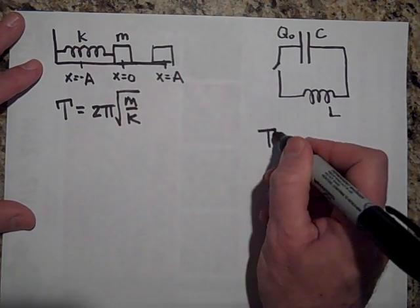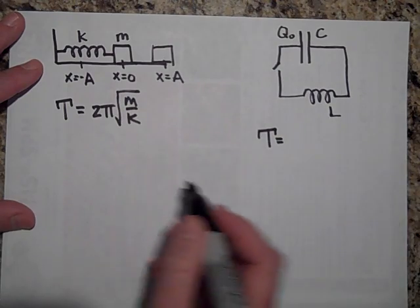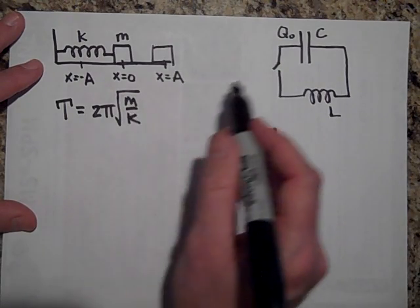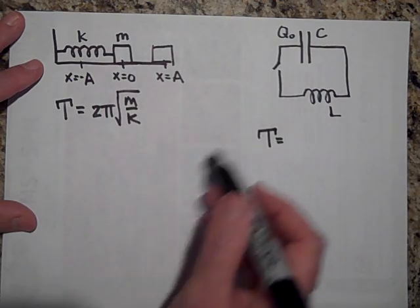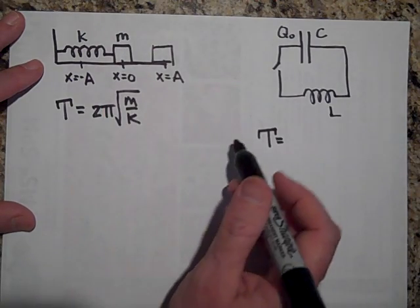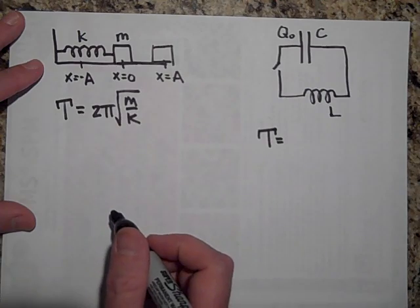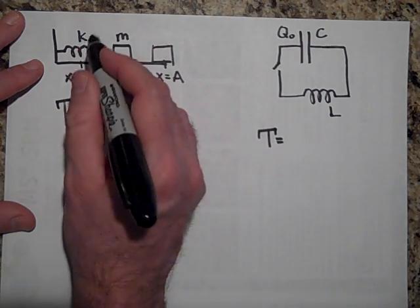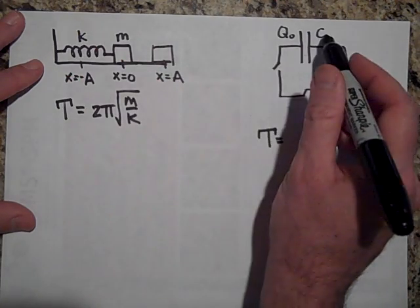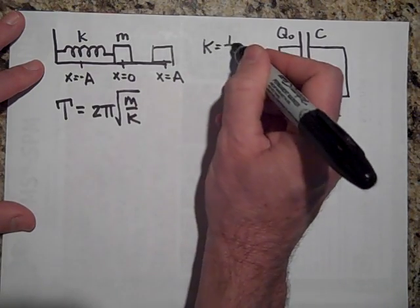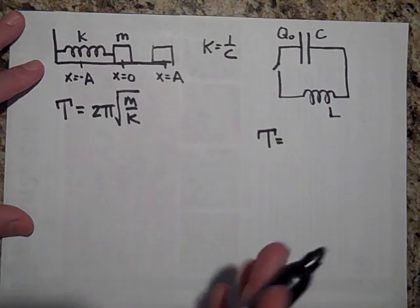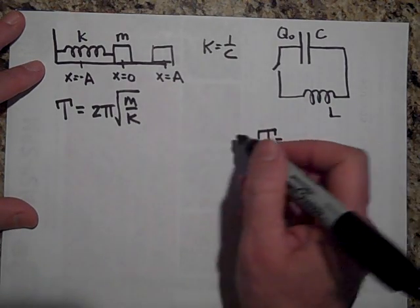So over here, the period is going to be—I have not derived this, but I just know that the analogs are: the mass is mechanical inertia, L is electrical inertia. Now, k here is analogous to 1 over C, so k is like 1 over C. That's the one kind of tricky analogy.